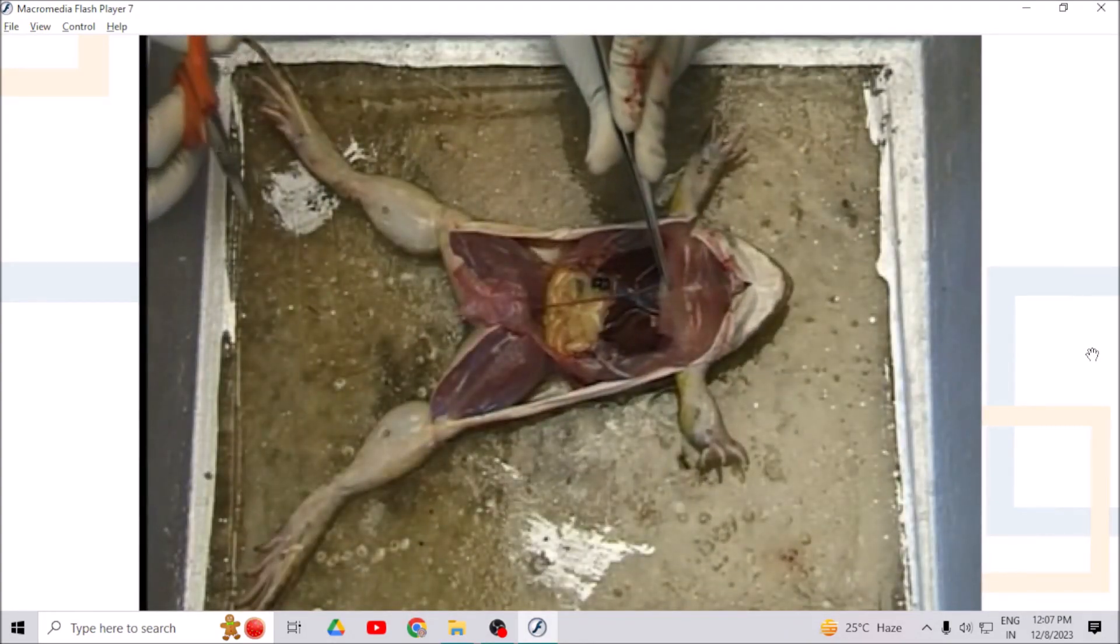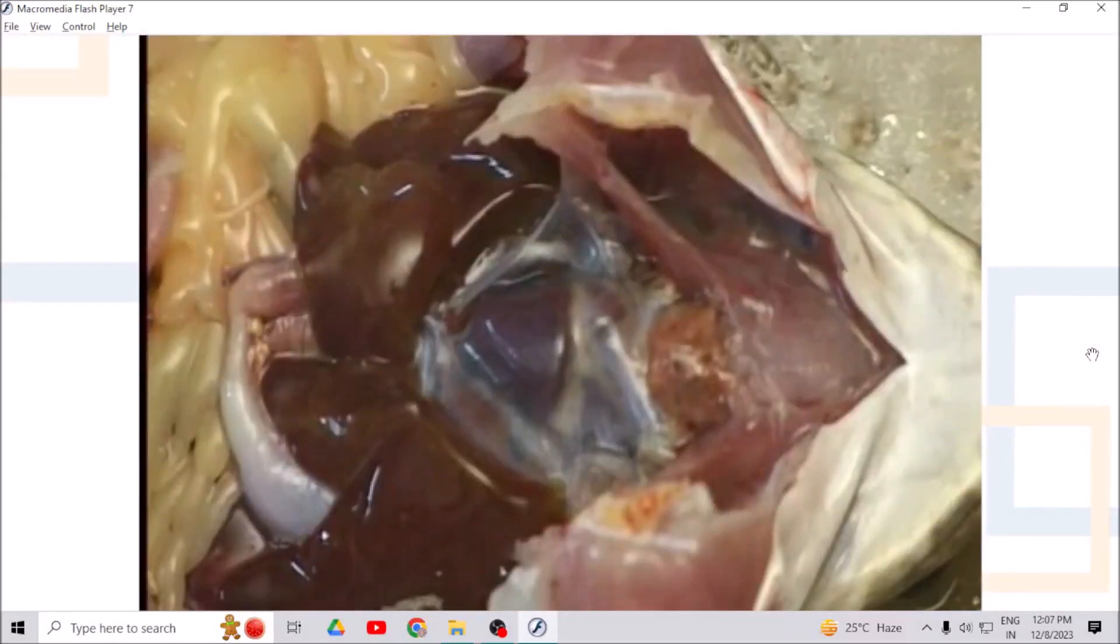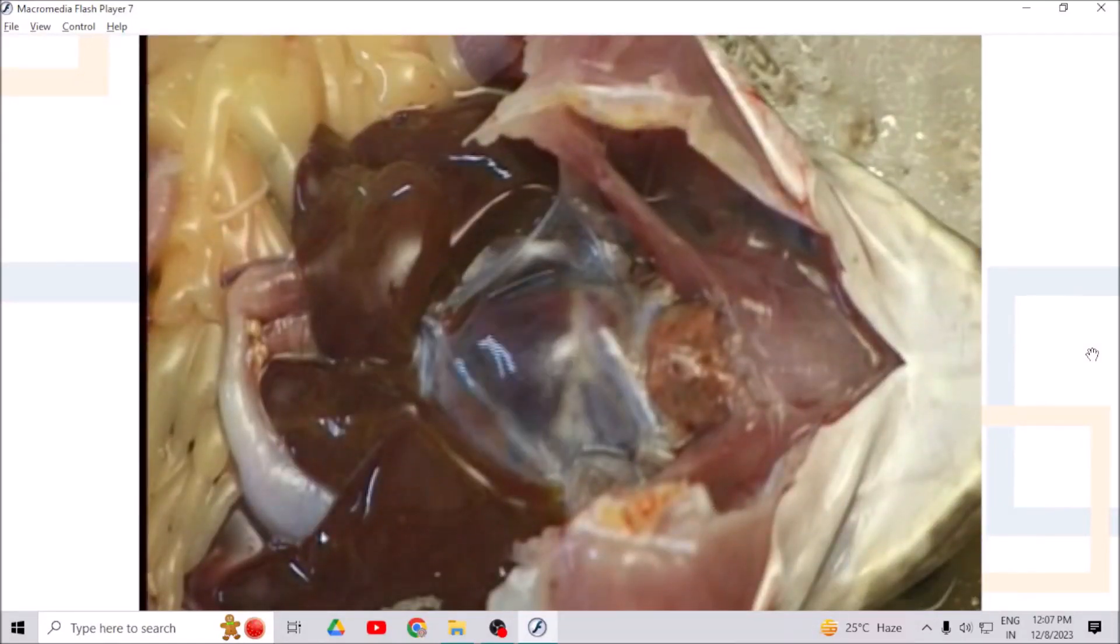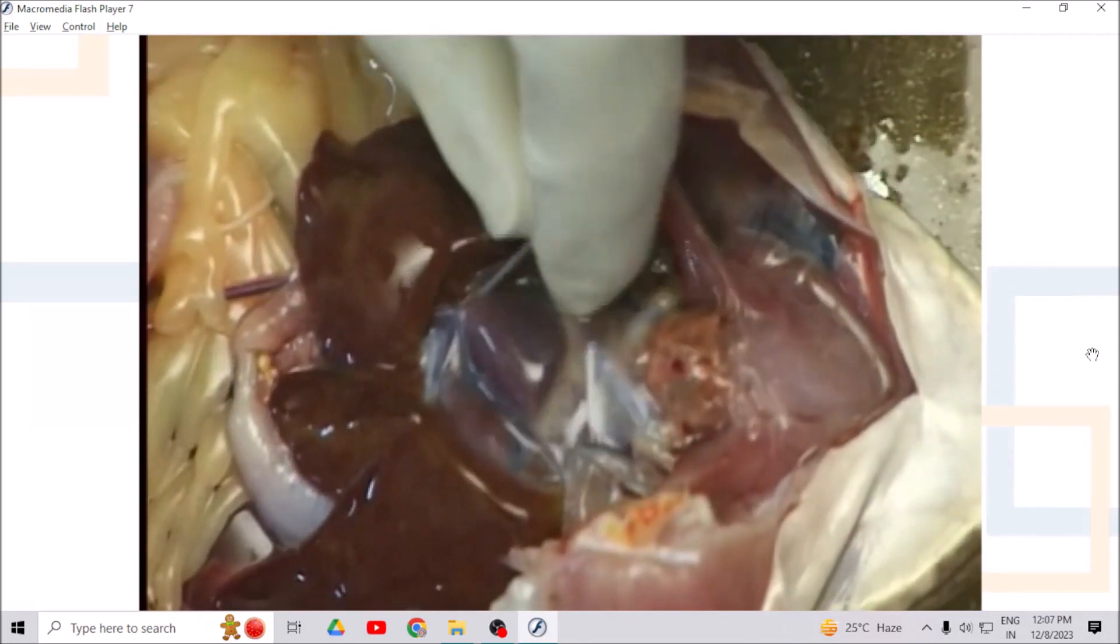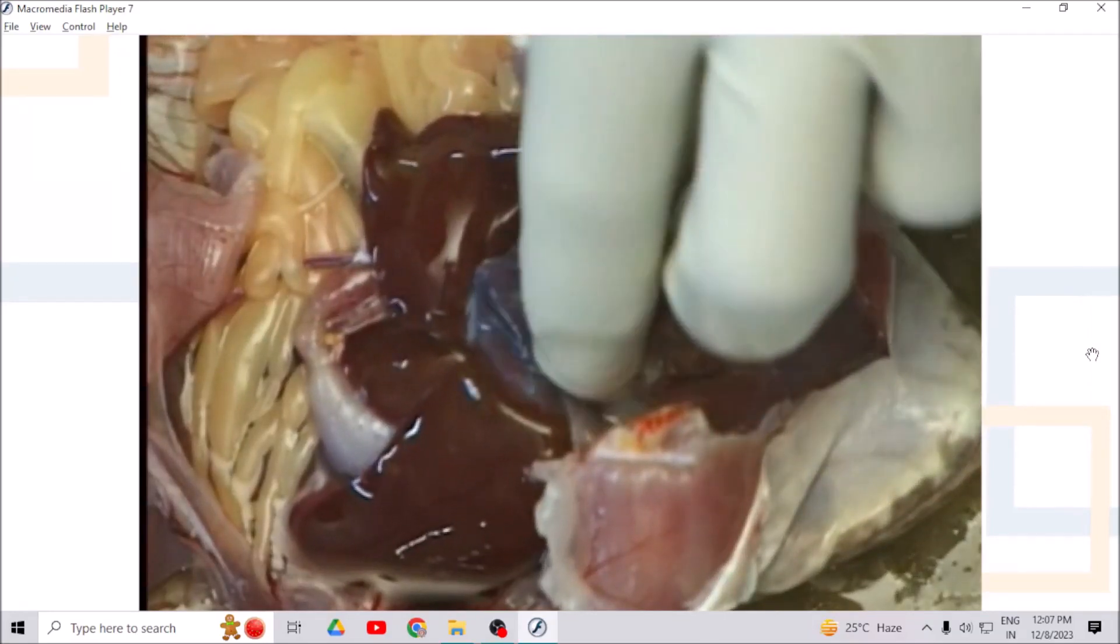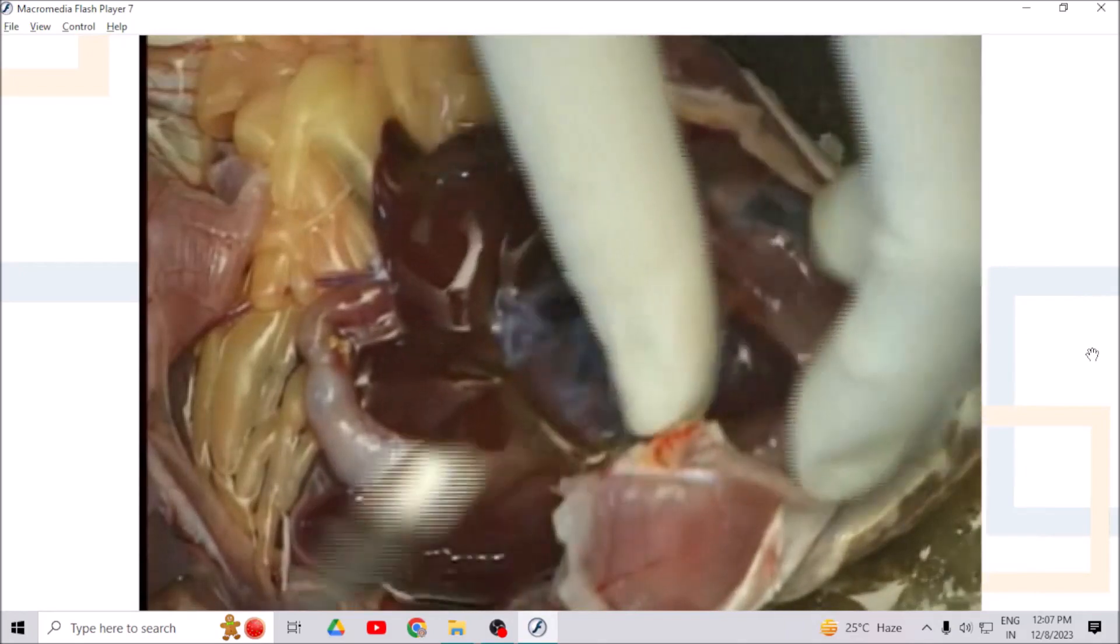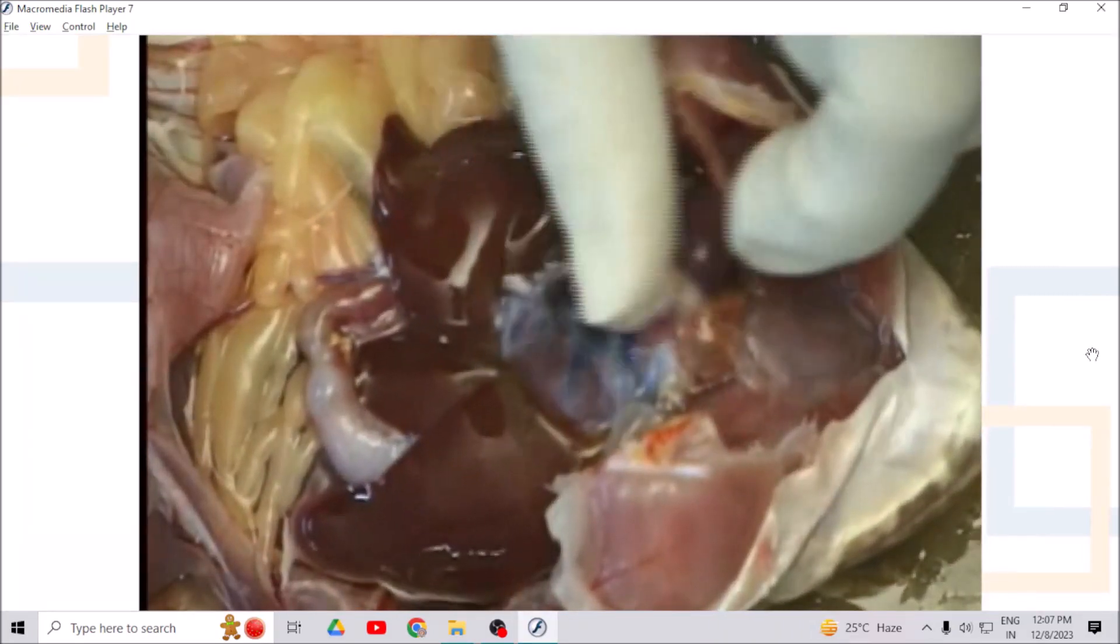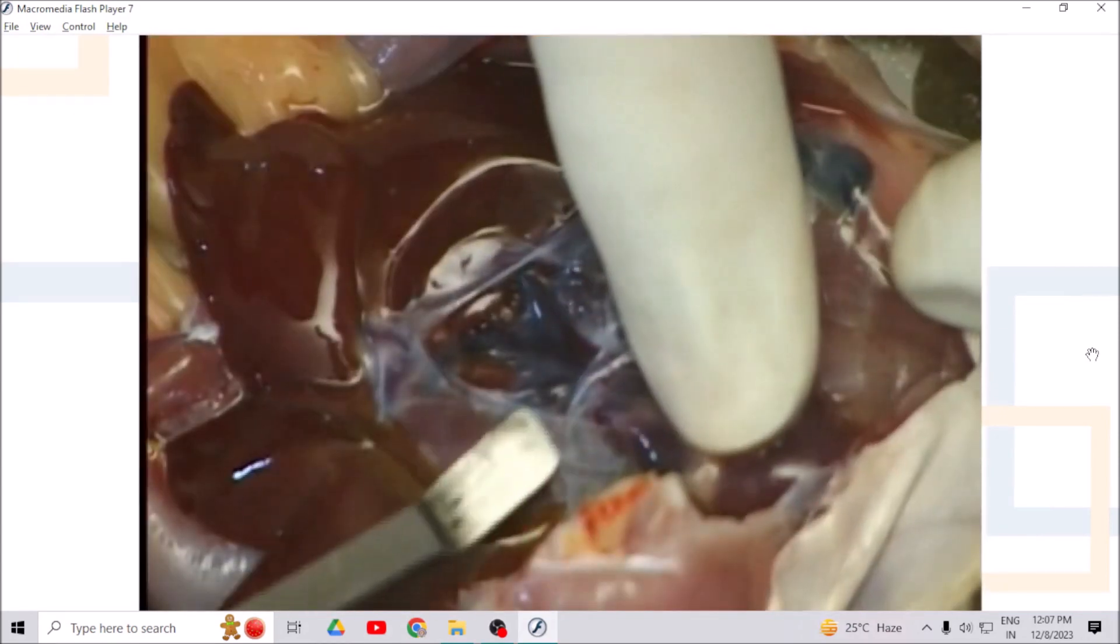Now, remove the pericardium that is a thin outer membrane without damaging the heart. Lift the heart by using fingers and tear off the thin membrane that covers the sinus venosus and its branches. Observe three branches of sinus venosus.